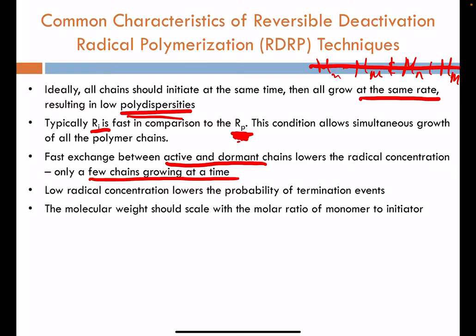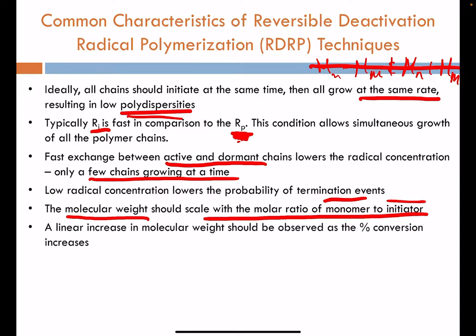This approach allows you to control molecular weight and scale it with the molar ratio of monomer to initiator. If you want double the molecular weight, you add the same amount of initiator but twice as much monomer. If you want tenfold the molecular weight, add tenfold the monomer to the same amount of initiator. There is a linear increase in molecular weight that progresses with conversion of monomer into polymer. If half of the monomer is converted, you have half of the ultimate molecular weight; if three quarters of the monomer is converted, you have three quarters of the ultimate molecular weight.